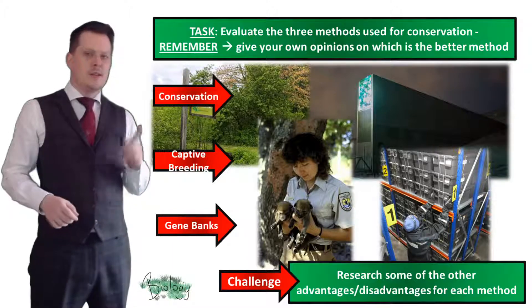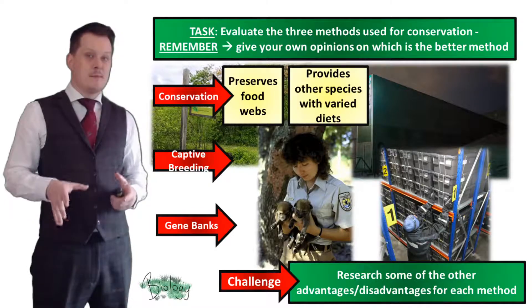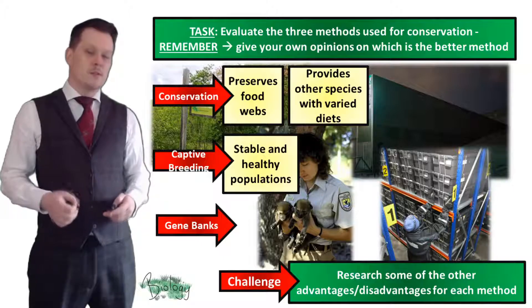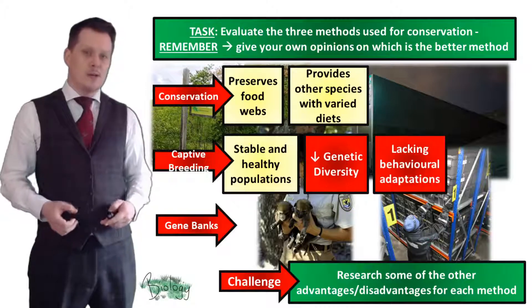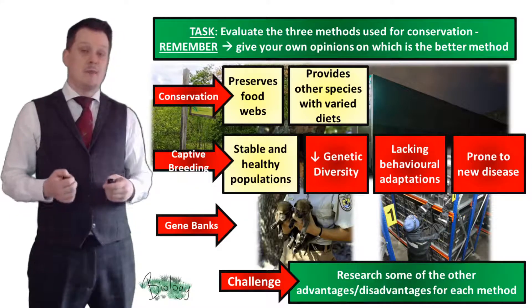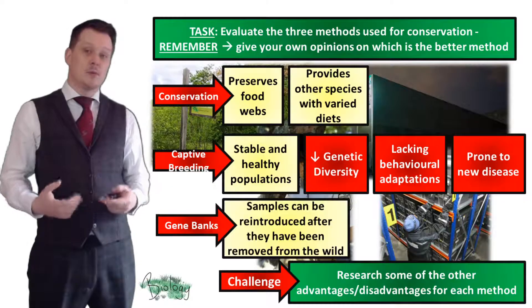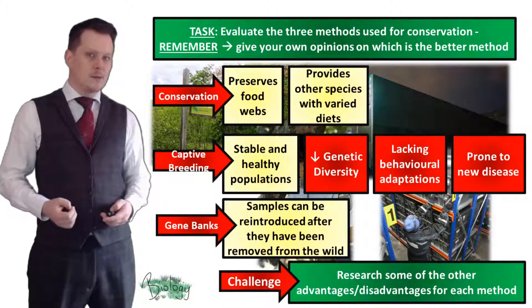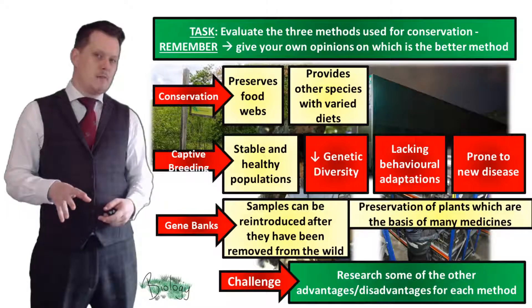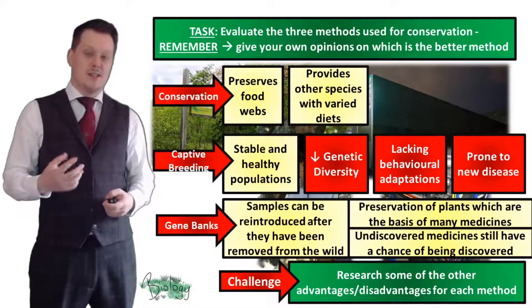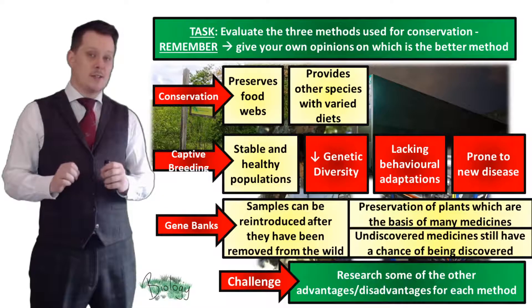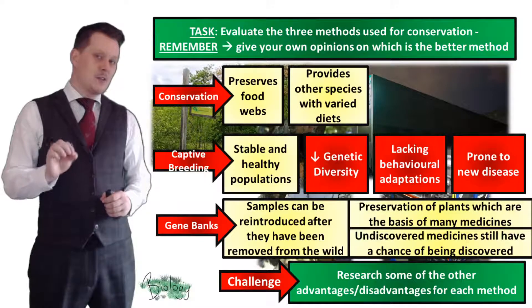Conservation preserves food webs and provides other species with varied diets. Captive breeding ensures stable and healthy populations, but comes at the cost of decreased genetic diversity — meaning animals lack behavioural adaptations when released into the wild, and are also more prone to new diseases. Gene banks have samples of species which can be reintroduced after extinction, and have added advantages because many plants are the basis of modern medicines — meaning undiscovered medicines still have a chance of being found. This is an evaluate question, so write a conclusion on which method you think is best and why — there is no wrong answer.